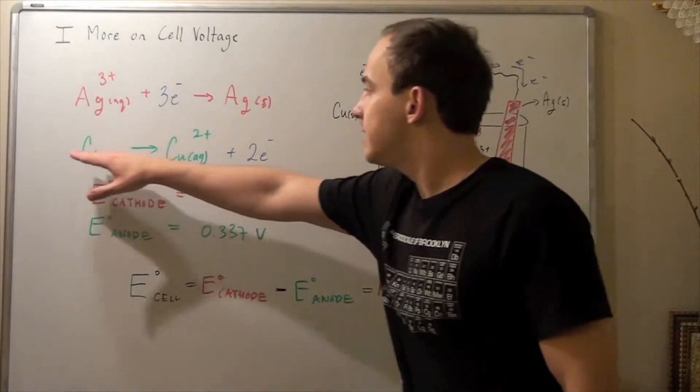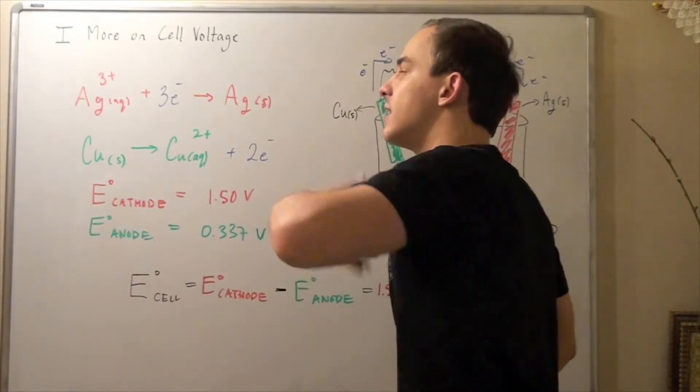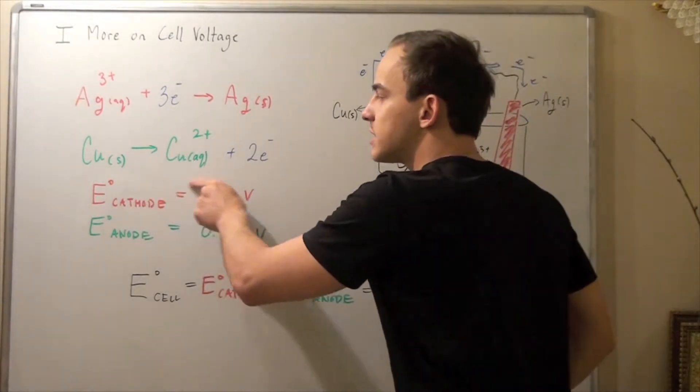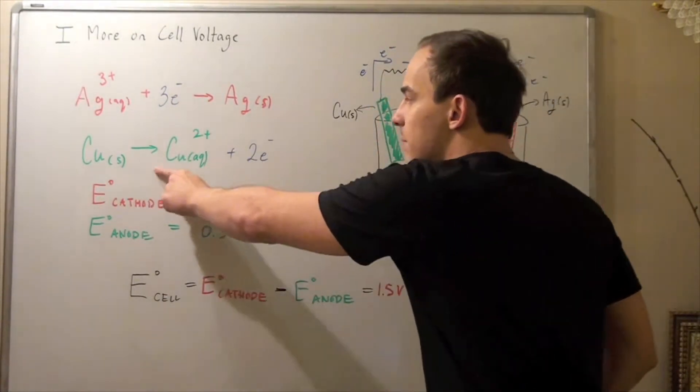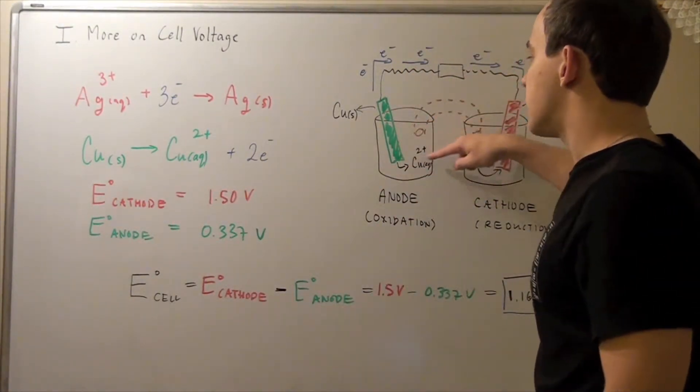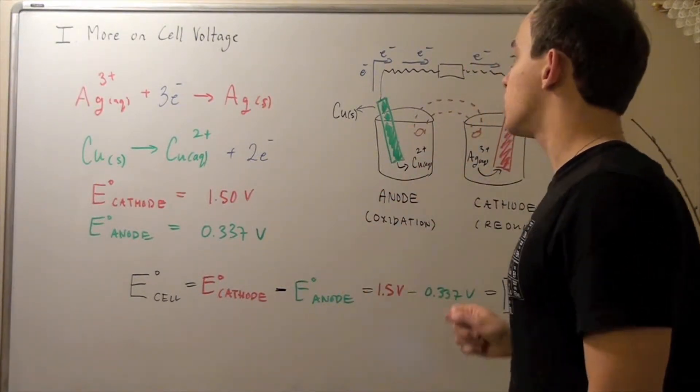So in the anode, oxidation takes place. In other words, copper solid is oxidized, it loses two electrons, and becomes copper ion. Now this copper ion is released into this beaker. So our concentration of copper ion, as our reaction progresses, increases in beaker one.